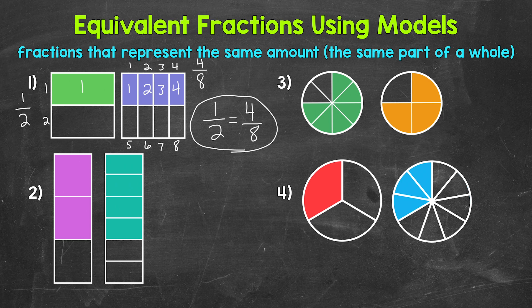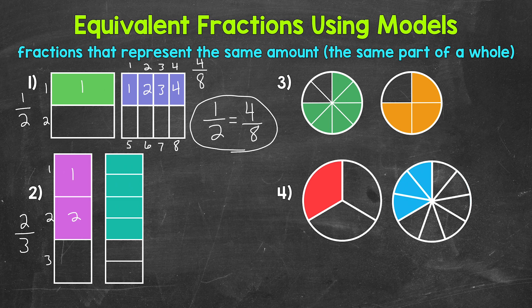And we can write that out by putting an equal sign in between the fractions. Let's move on to number two, where we have two rectangles that are the same size. And we can see that the same amount of each rectangle is shaded in, but each of those rectangles has been divided into a different number of equal parts, so we're going to have equivalent fractions here. Let's write out those equivalent fractions, and we will start with the rectangle on the left. It's been divided into one, two, three equal parts, so three is our denominator. And then one, two parts are shaded in, so two is our numerator. Two thirds of that rectangle is shaded, so that rectangle is representing two thirds.